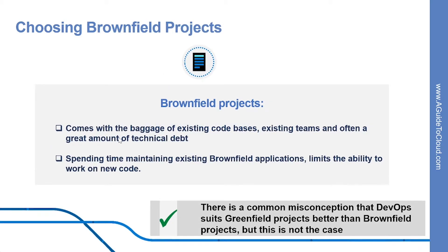Brownfield projects come with the baggage of existing code bases, existing teams, and often a great amount of technical debt, but they can still be ideal projects for DevOps transformations. When your teams are spending a large percentage of their time just maintaining the existing Brownfield application, you have limited ability to work on new code. It's important to find a way to reduce that time and to make software releases less risky. A DevOps transformation can provide that. The existing team members will often have been worn down by the limitations of how they have been working and be keen to experiment with new ideas.